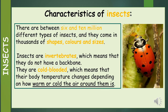Characteristics of insects. There are between 6 and 10 million different types of insects. They come in thousands of shapes, colours and sizes. Insects are invertebrates, which means that they do not have a backbone. They are cold-blooded, which means that their body temperature changes depending on how warm or cold the air around them is.